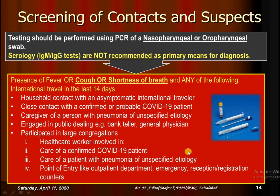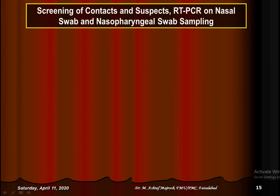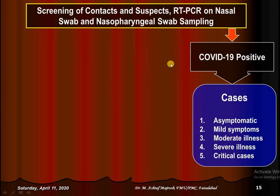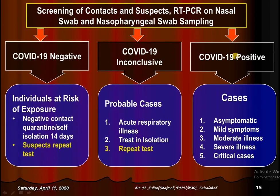All such individuals are subjected to screening with real-time PCR as per protocols. Screening of contacts and suspects via nasopharyngeal swab and real-time PCR will segregate cases into three categories: COVID-19 positive — these are the confirmed cases; COVID-19 inconclusive — these are the probable cases; and COVID-19 negative — individuals at high risk of exposure.